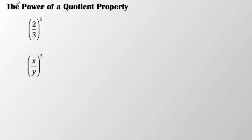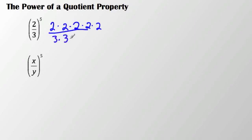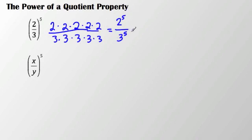Now what we're going to do is move on to the power of a quotient property. So if I have 2/3 to the 5th, that means I have 2 times 2 times 2 times 2 times 2 divided by 3 times 3 times 3 times 3, which really means I have 2 to the 5th over 3 to the 5th. If I'm asked to simplify, this is probably where I would leave it. But if asked to evaluate, I take 2 to the 5th, which is 32, over 3 to the 5th, which is 243.